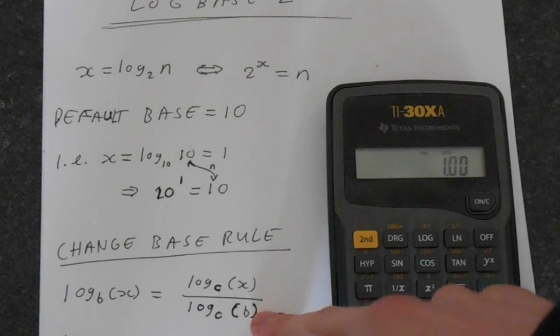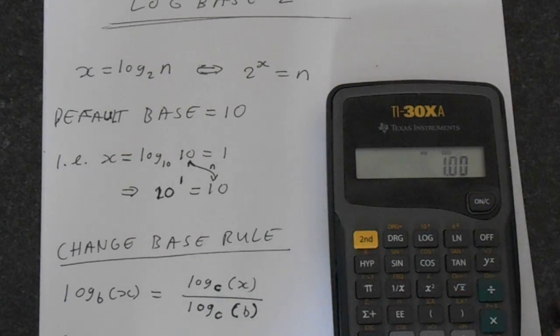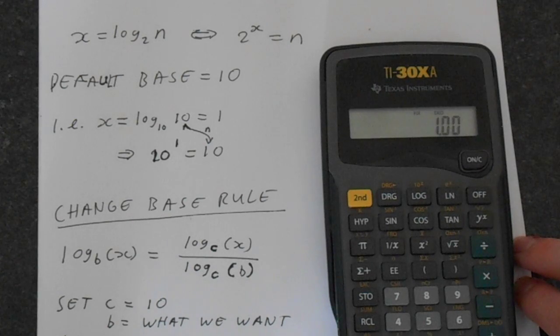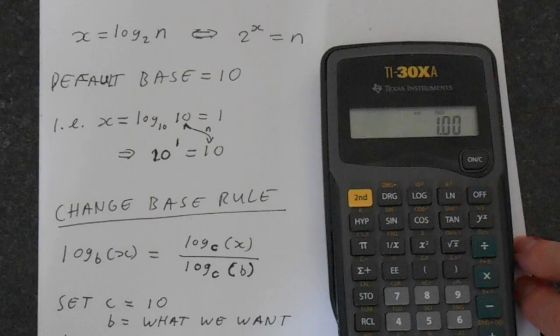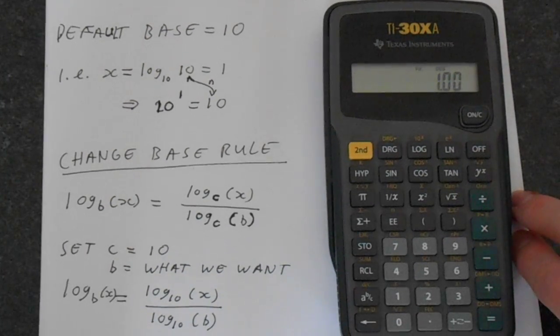So it's quite simple to substitute in. Let's set c equal to 10, that's the default of the calculator. And b can be what we want. So if we want log 2 then we make b 2, if we want log 3 we make it 3. So we can rewrite that expression in a nice simple form.